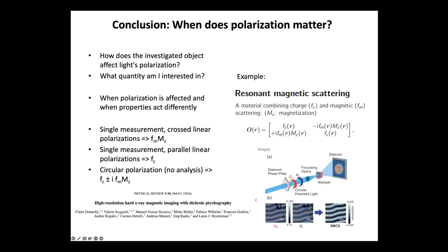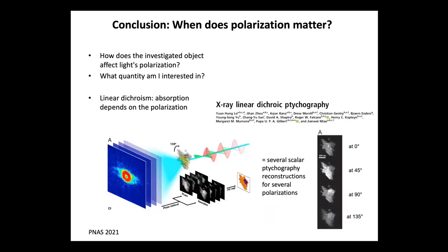That shows that depending on what you are interested in, it may not always be necessary to go for vectorial. I have another example from the recent literature where people were interested in linear dichroism — absorption that depends on the polarization. The approach was to use several angles of linear polarization illumination, so several scalar ptychography measurements and reconstructions. They could get different kinds of images depending on how they illuminated their objects. So it is another way to use a kind of scalar ptychography even on materials that affect the polarization of light.